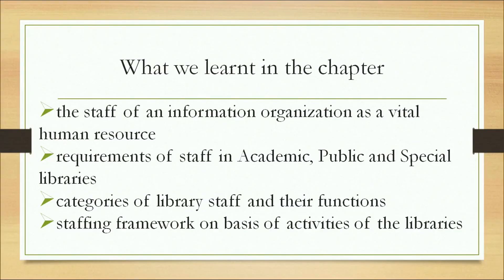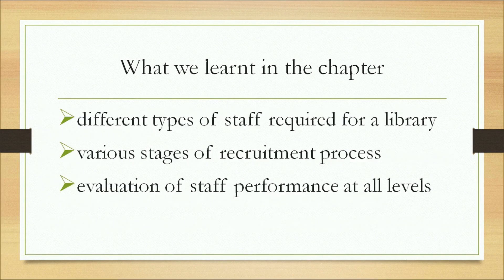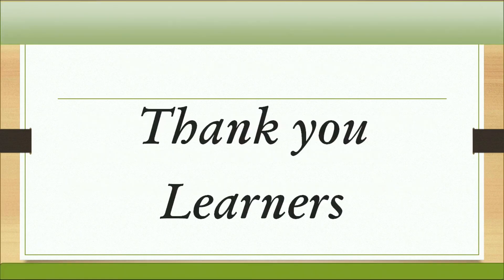To summarize what we have learned in this chapter: the staff of an information organization is a vital human resource; requirements of staff in academic, public, and special libraries; categories of library staff and their functions; the staffing framework on the basis of activities of libraries; different types of staff required for libraries; various stages of recruitment processes; and evaluation of staff performance at all levels. Thank you so much.